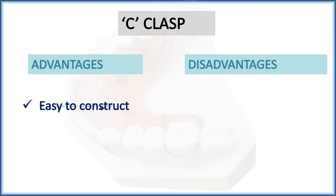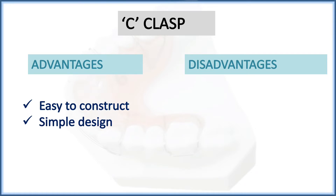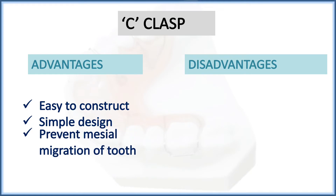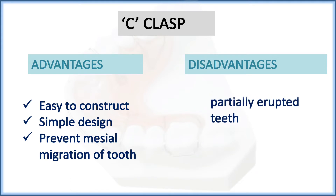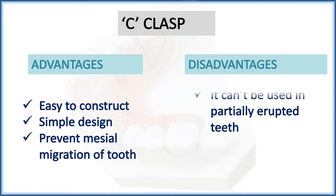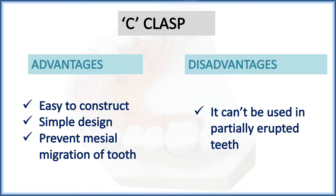Advantages of the C clasp: it is easy to construct with a simple design, as you can see in the figure, and it prevents mesial migration of teeth. The disadvantage is it cannot be used in partially erupted teeth because it engages the buccal cervical undercut.